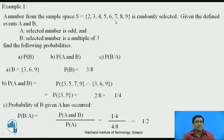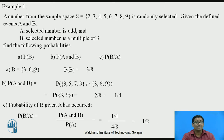The number of sample space S is 8. For event B — selected number is a multiple of 3 — the multiples of 3 in the sample space are 3, 6, 9. Therefore N = 3 and S = 8, so probability of B equals N/S = 3/8.